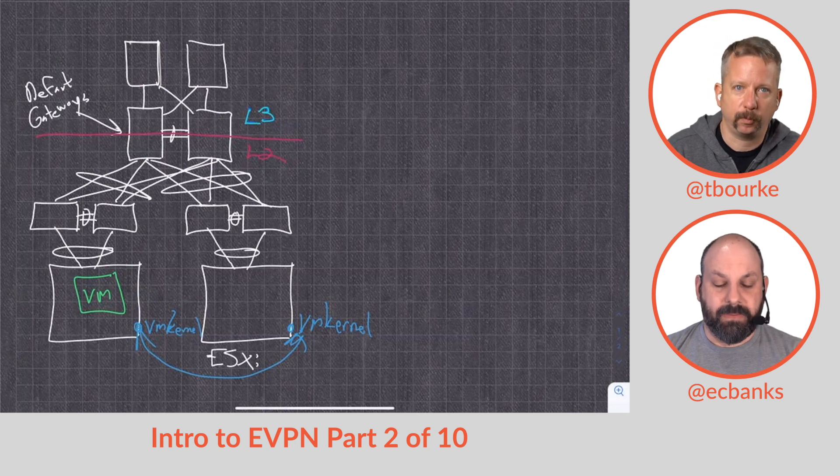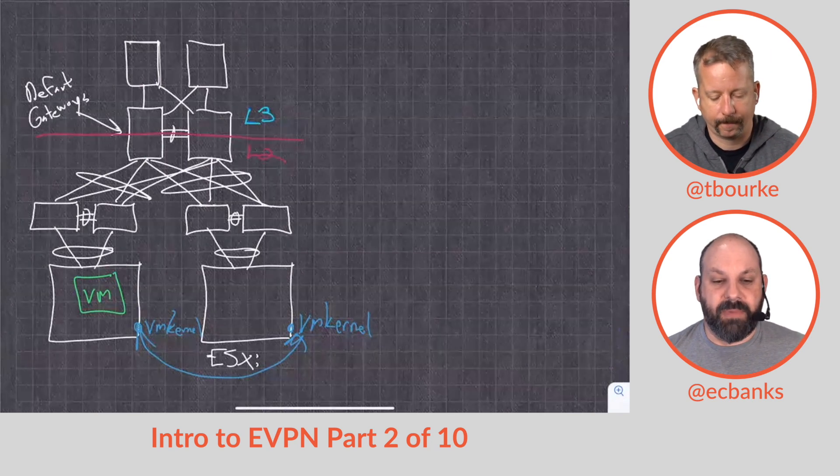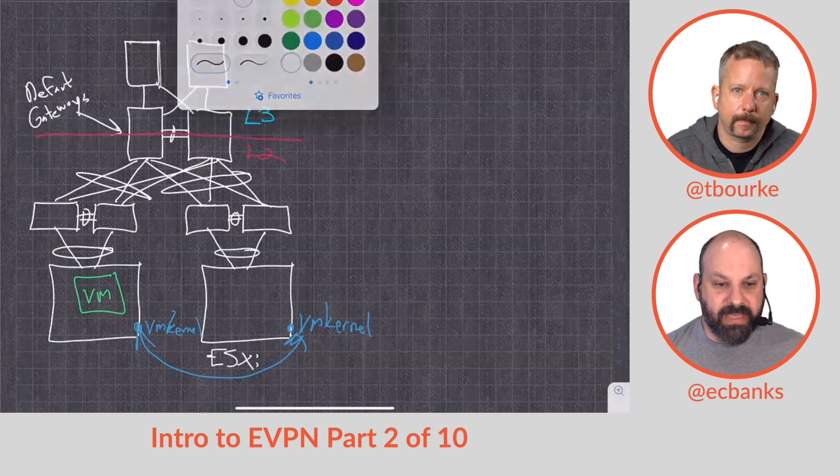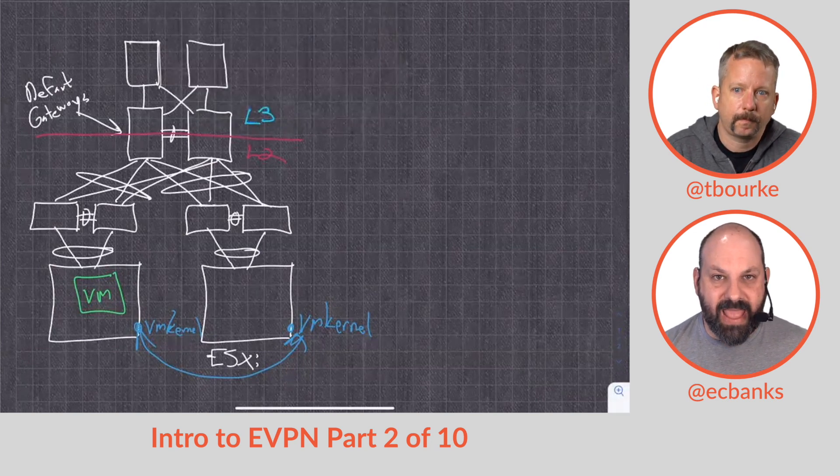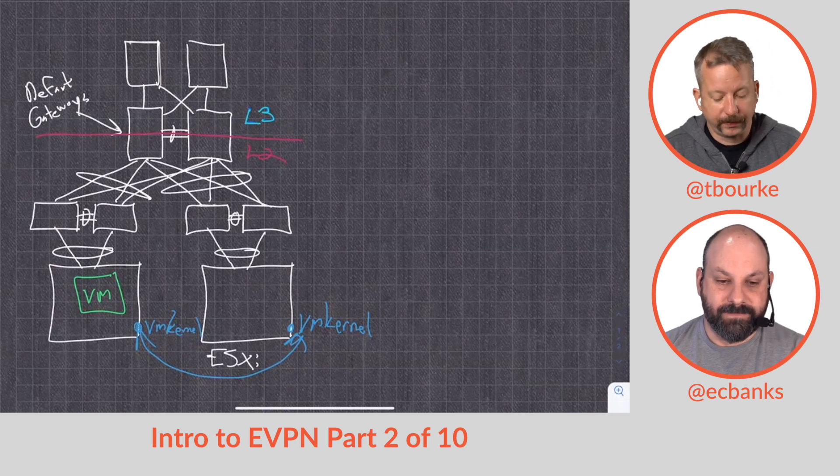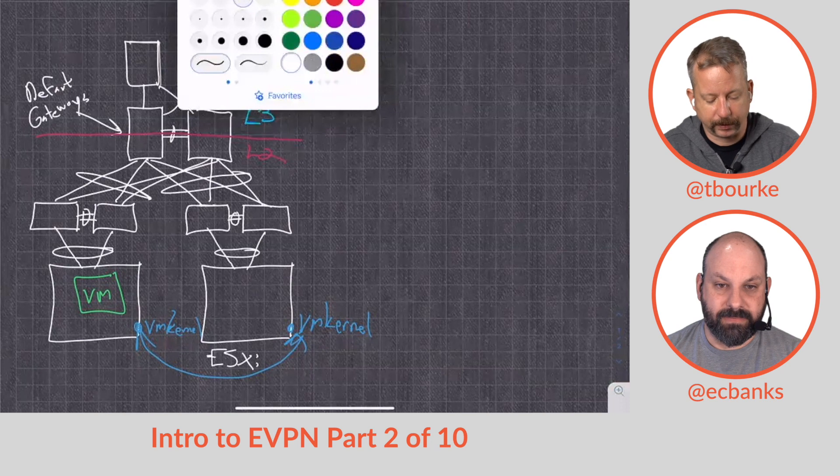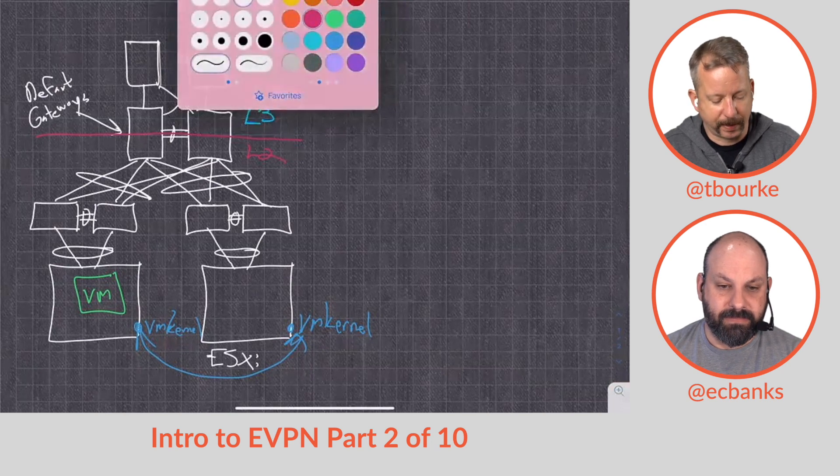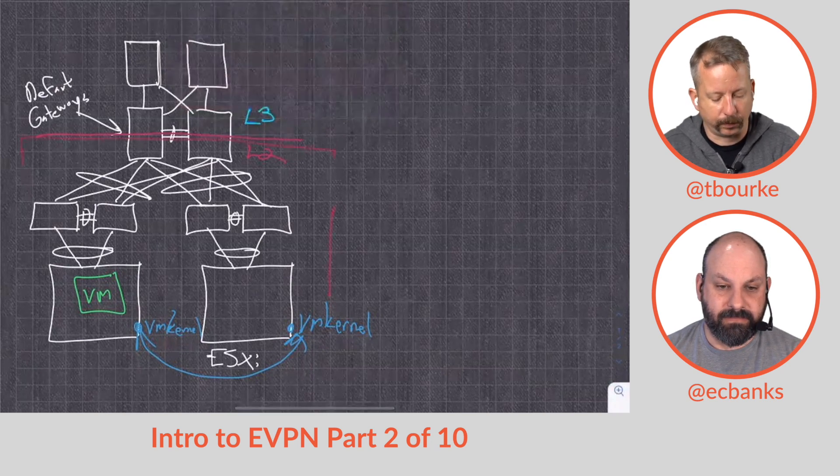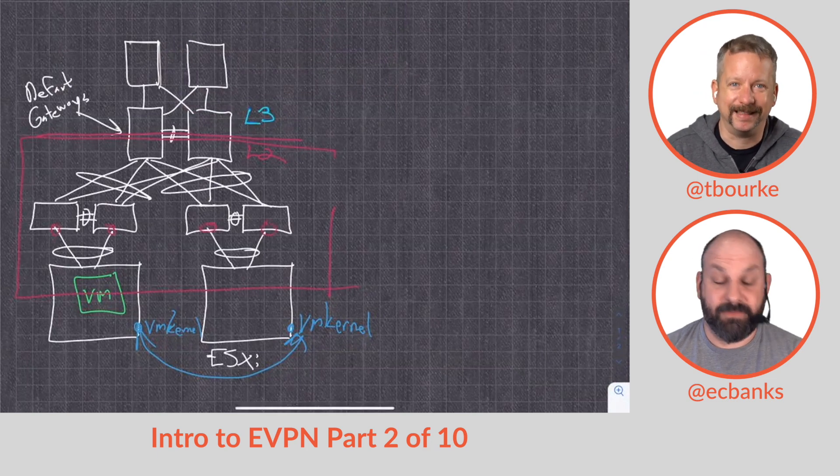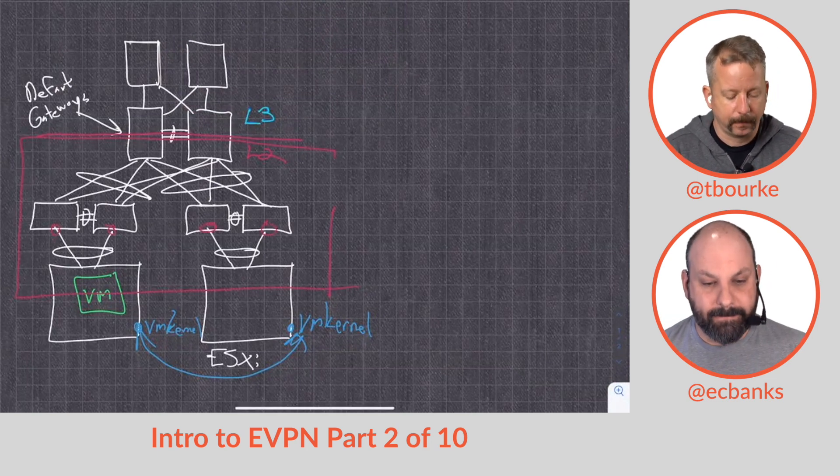We can pick up the VM and move it across a layer 3 boundary, but when the VM gets to where it's going, it's still got to have that same layer 2 that it had wherever it was coming from. In this case, we're not even doing that. The same VLANs are spanned across all of these ports. We're not doing any layer 3 boundaries at this point. There is no layer 3 boundary in this.